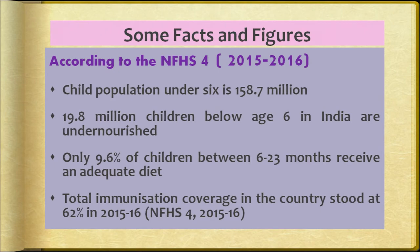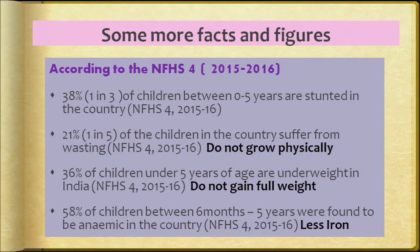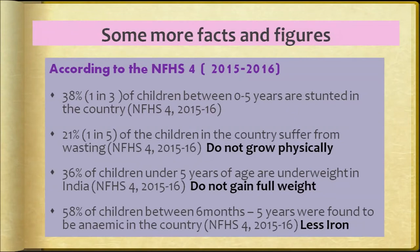Only 9.6% of children between 6 to 23 months receive an adequate diet. Total immunization coverage in the country is now at 62%, which is a good figure, but still many children are not getting immunized. According to the NFHS survey, 38% of children — that is 1 in 3 children between 0 to 5 years — are stunted. They are not getting enough food for optimal growth. Additionally, 1 in 5 children in the country suffer from wasting and are not growing properly.